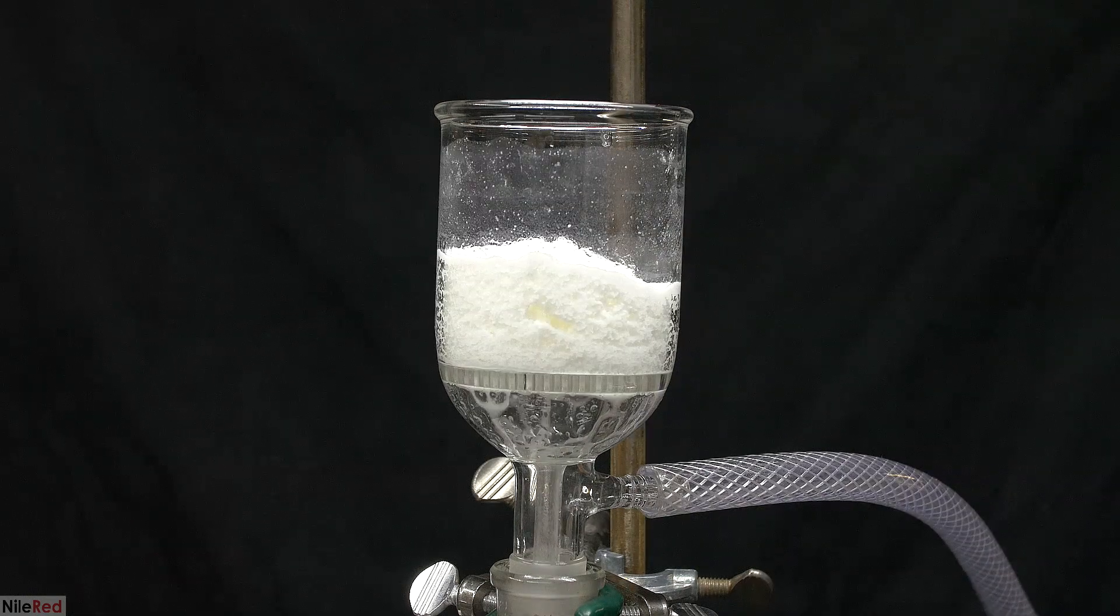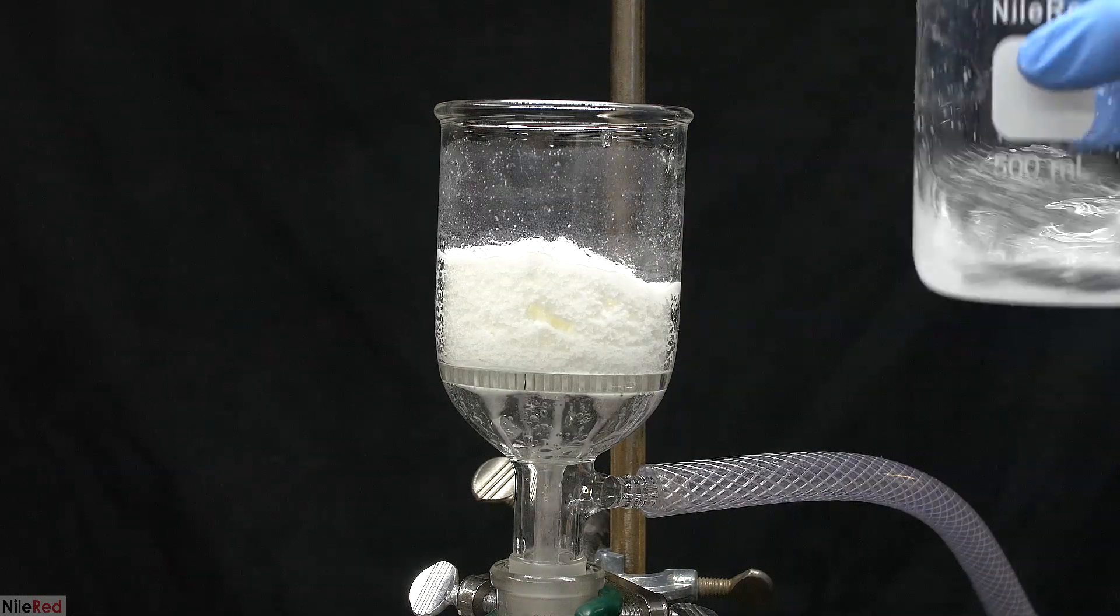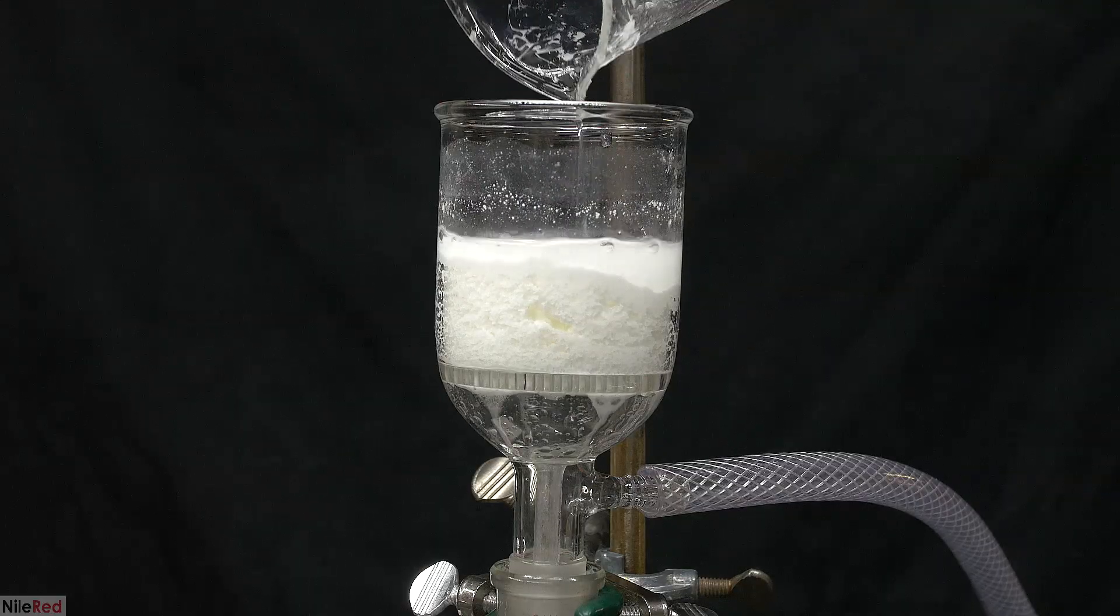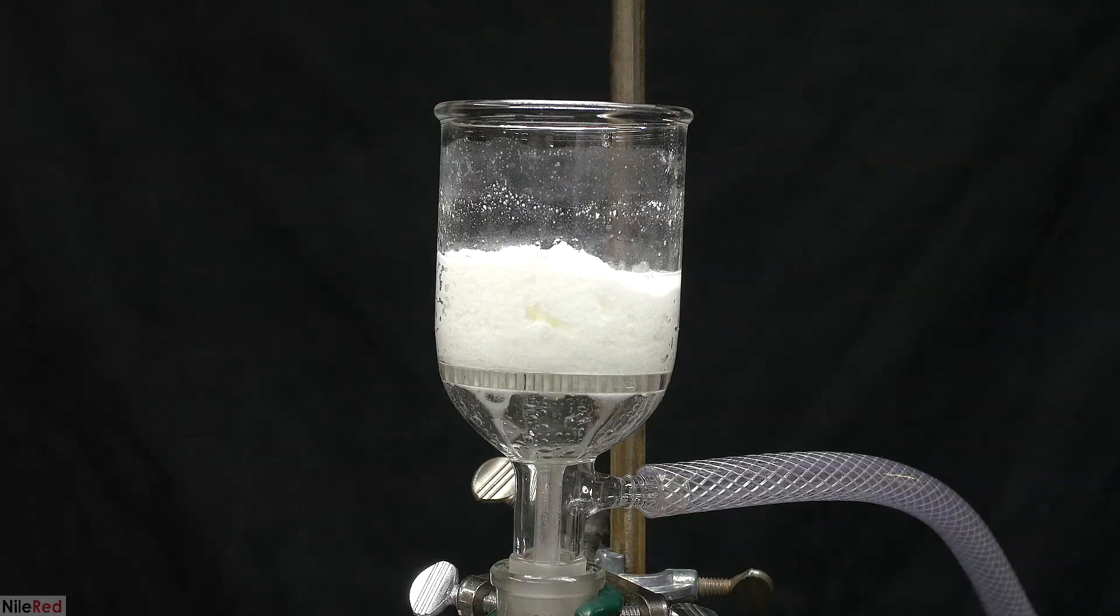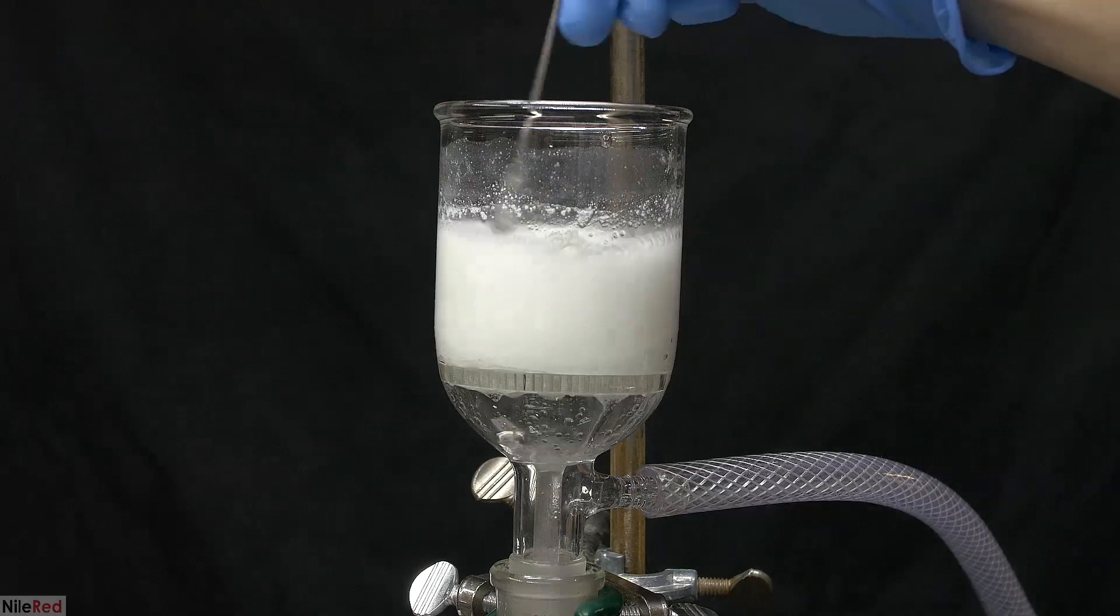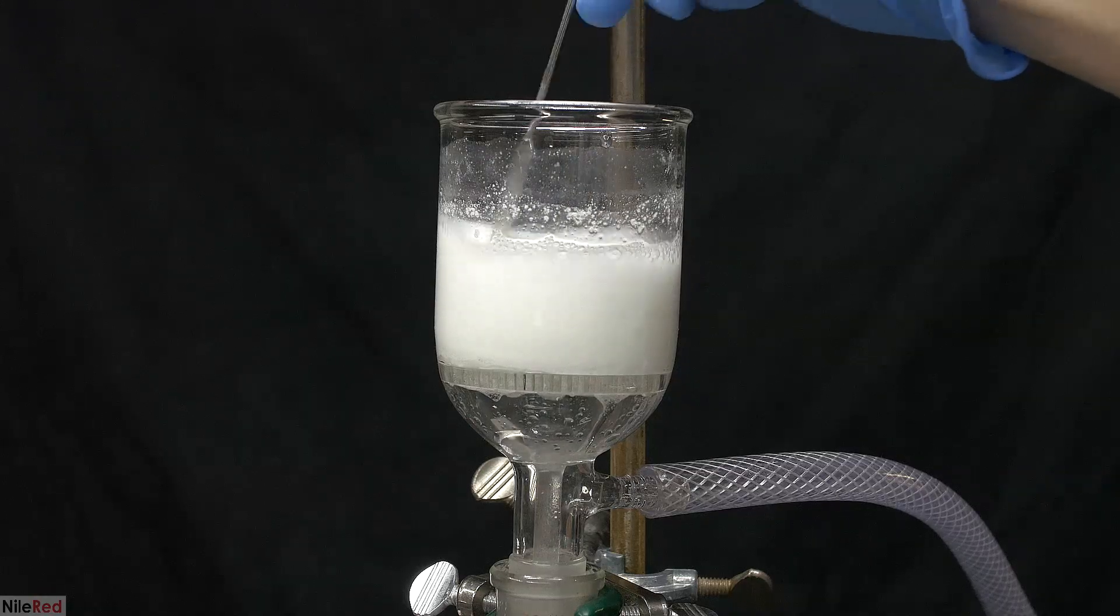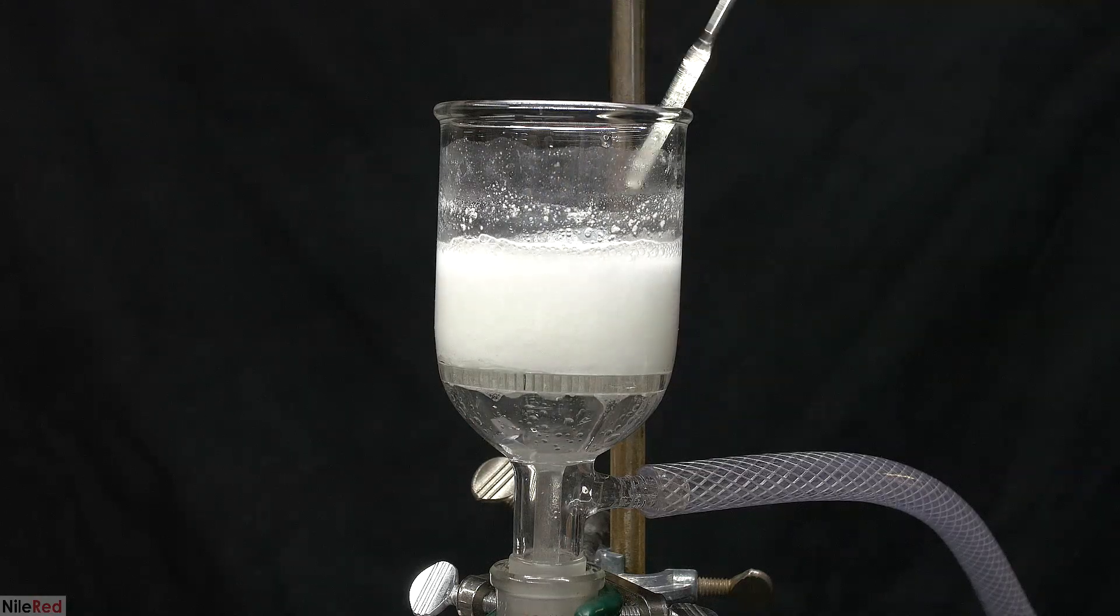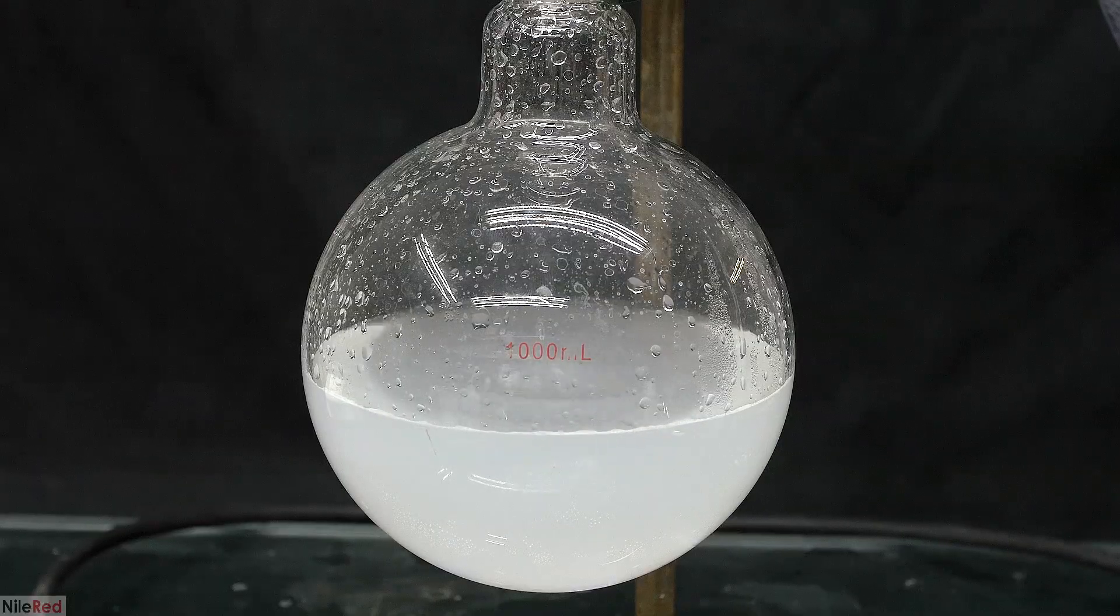All of the impurities that made the solution opaque should still be present, and because they passed through the filter, I figured that I could probably wash them away here. So using ice cold water, I washed the adipic acid a few times. In the flask below, you can see that what I'm collecting is opaque.